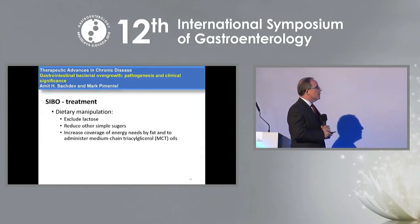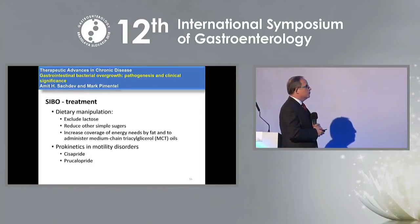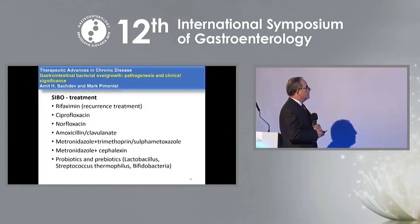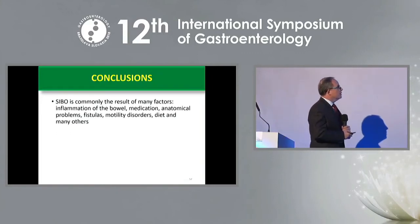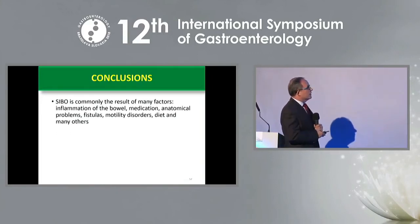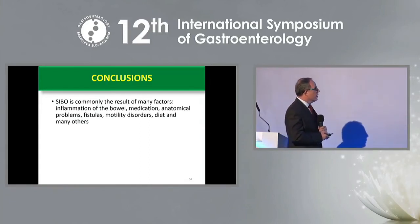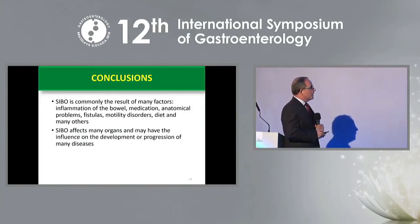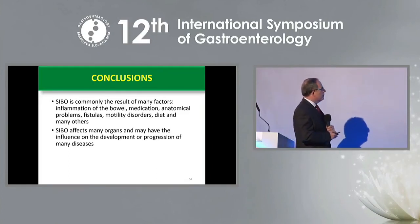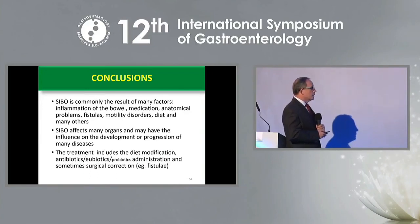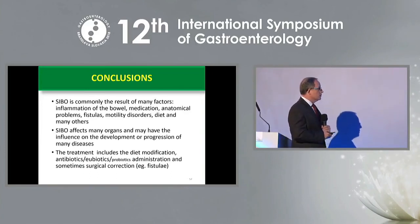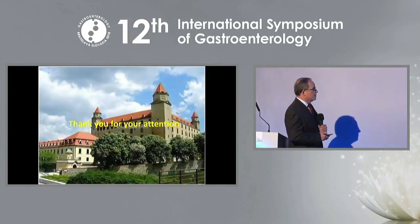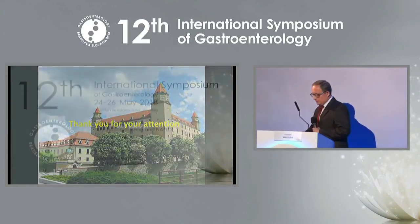SIBO treatment includes dietary manipulation, prokinetics in motility disorders, and antibiotics. In conclusion, SIBO is commonly the result of many factors: inflammation of the bowel, medication, anatomical problems, fistulas, motility disorders, diet, and many others. SIBO affects many organs and may influence the development or progression of many diseases. Treatment includes diet modification, antibiotic administration, and sometimes surgical correction. Thank you very much for your attention.